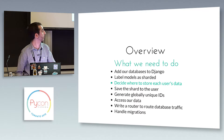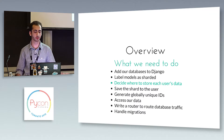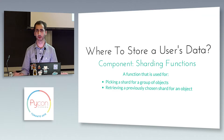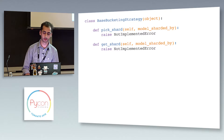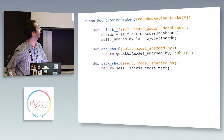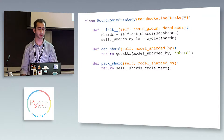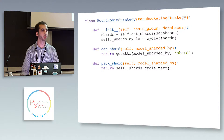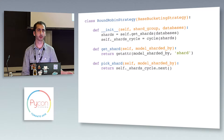The next thing is deciding where each user's data is going to be stored. These are called sharding functions — functions that either pick a shard to store data or retrieve a shard where you'll find data. It's just a class with two functions: pick_shard and get_shard. For get_shard, we read it right off the user model where we already saved the shard. For pick_shard, we cycle through the available databases, which should roughly even out the load — the first user gets database one, the second gets database two, and it loops back to distribute load evenly.